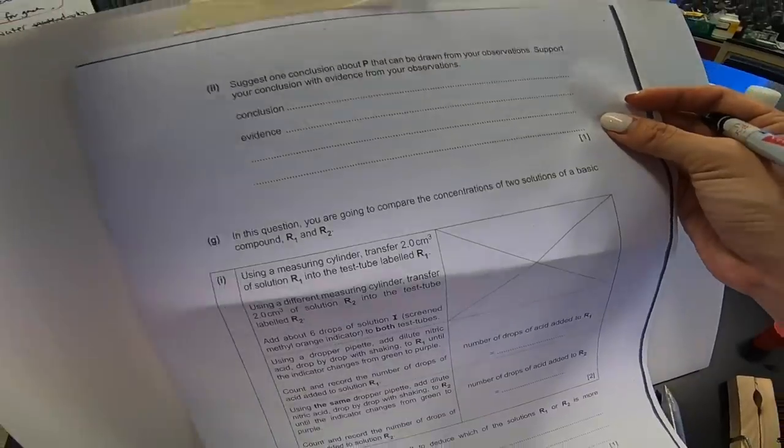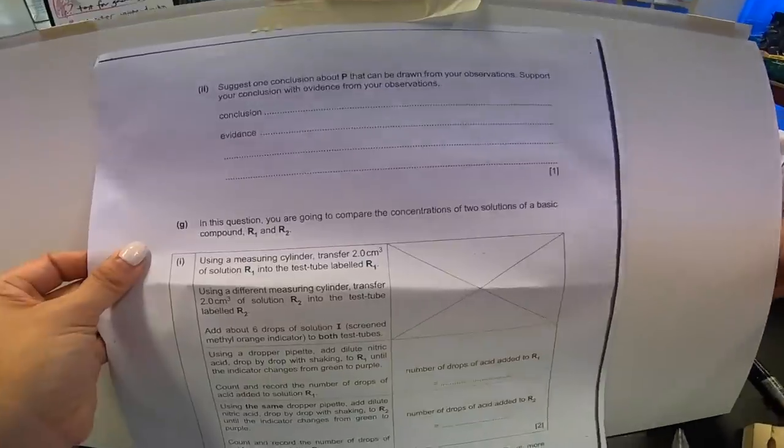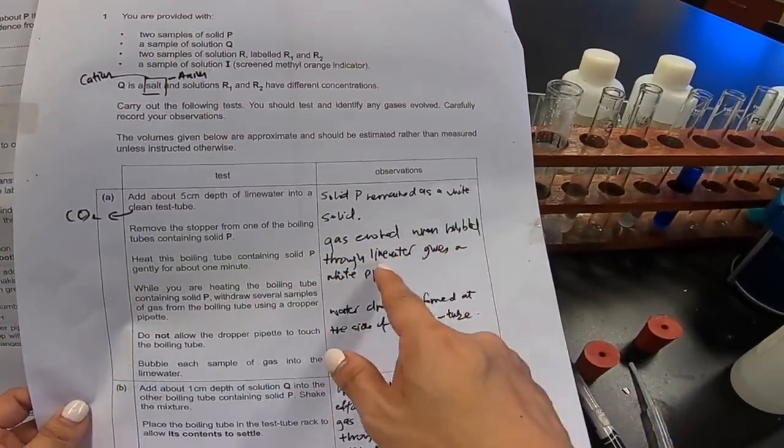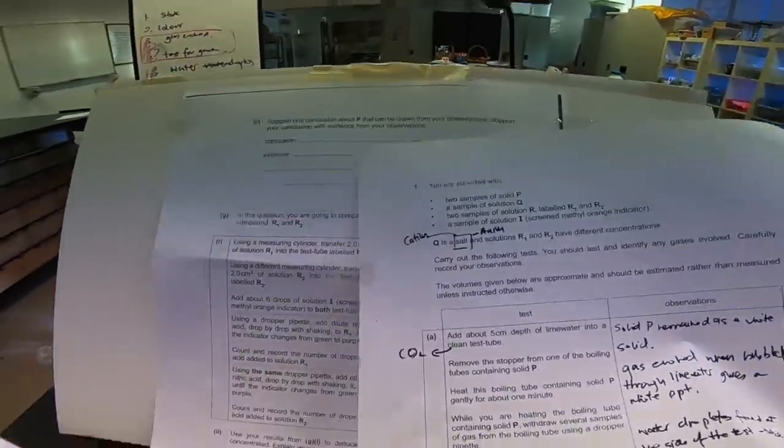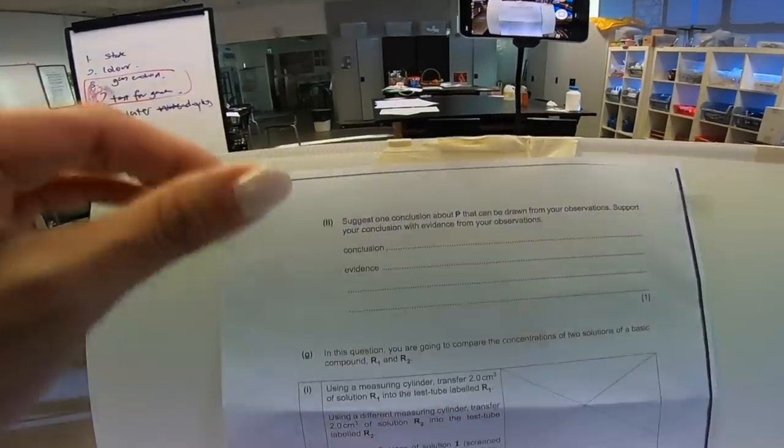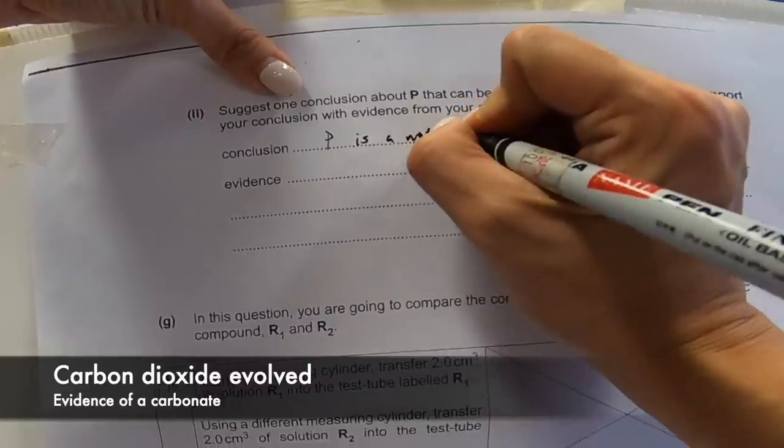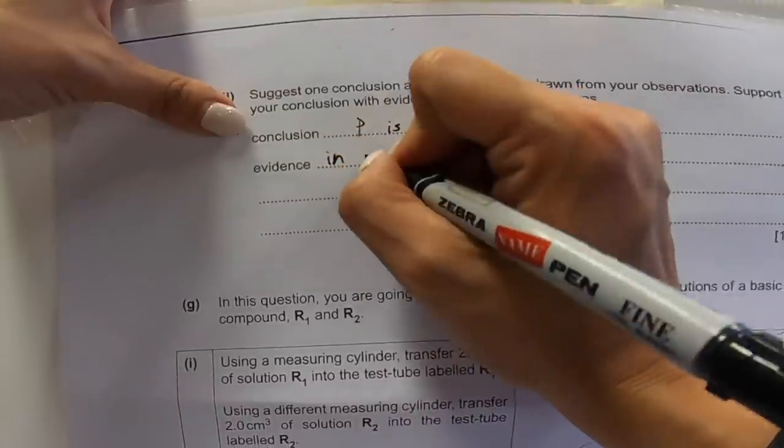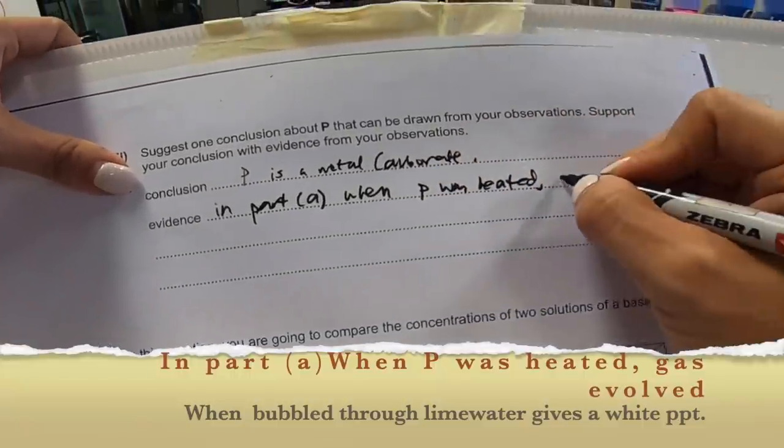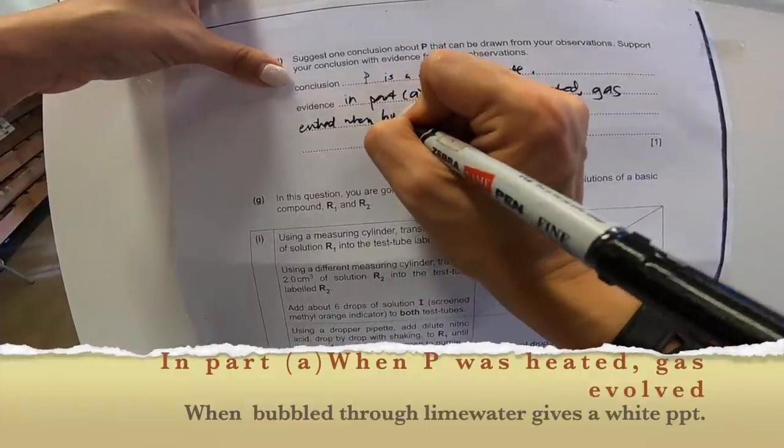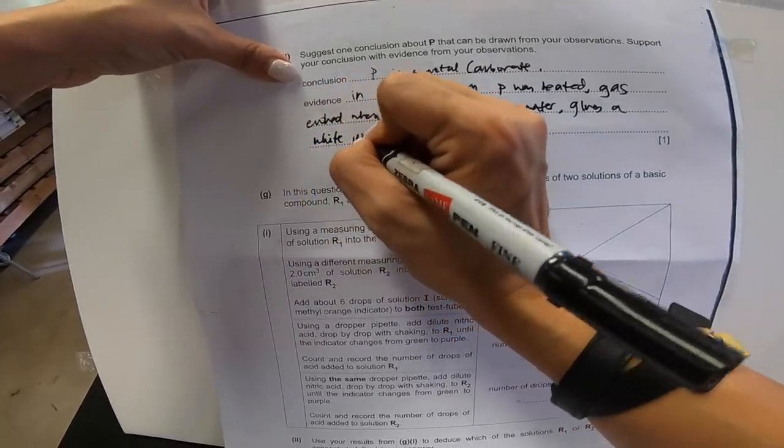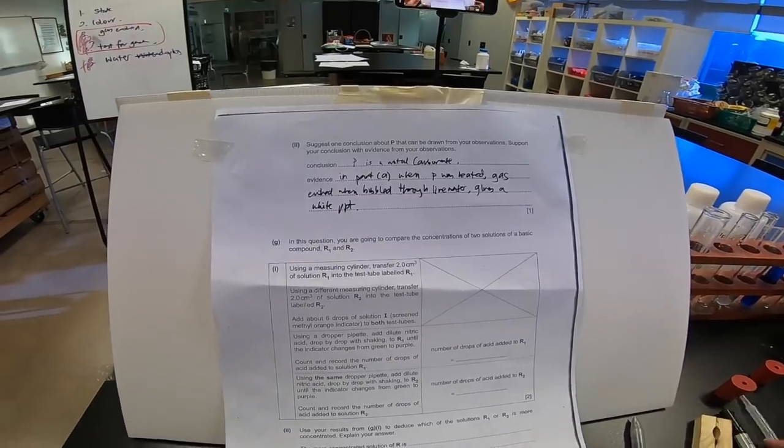Now, this portion over here says, suggests one conclusion about P that can be drawn from your observation. Information from our first part here. Now, if we take a closer look, we know over here that P, when heated, the gas evolved when bubble through lime water gives a white PPT. So from here, I will know conclusion that carbon dioxide is inside of P. So when P is heated and they evolved carbon dioxide, conclude that P is a metal carbonate and evidence is in part A. When P was heated, gas evolved when bubbled through lime water gives a white PPT. And with that, we finish this part. Let's move on to our part G over here.